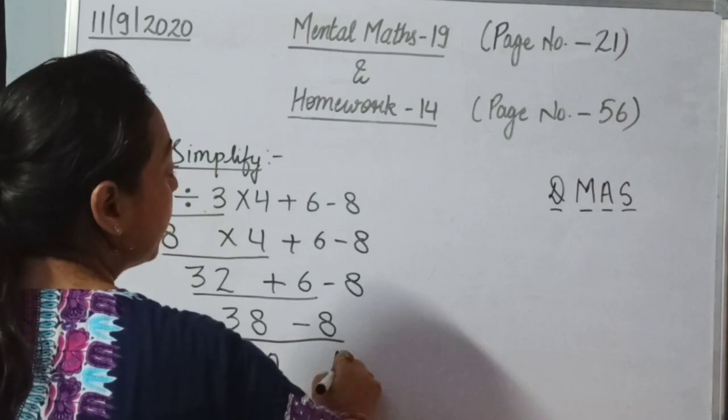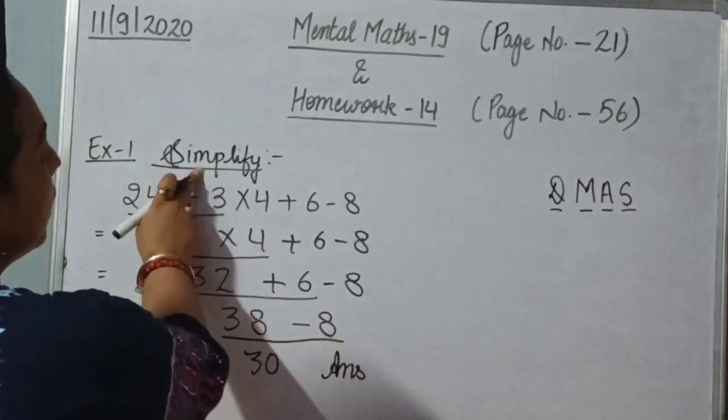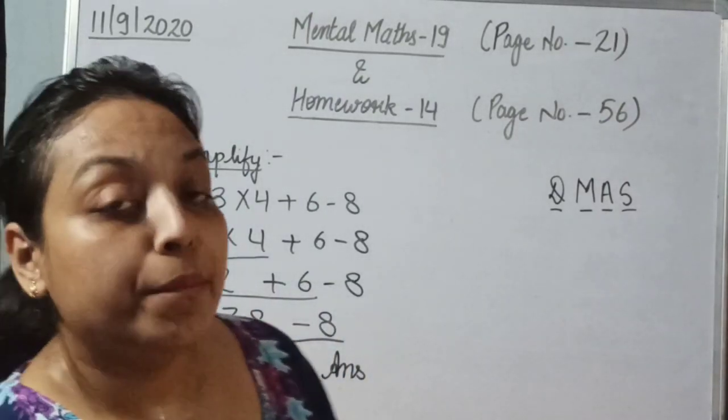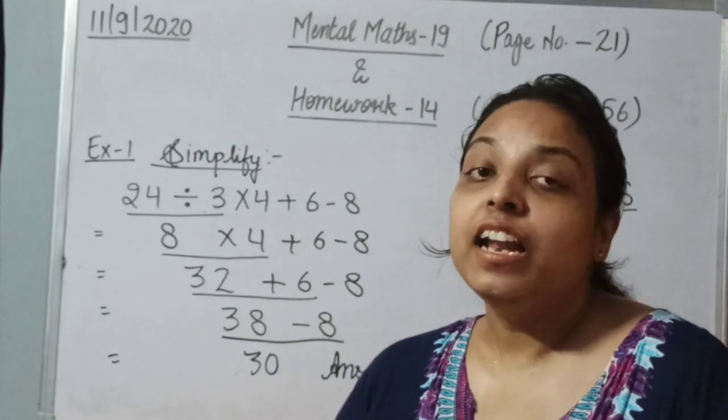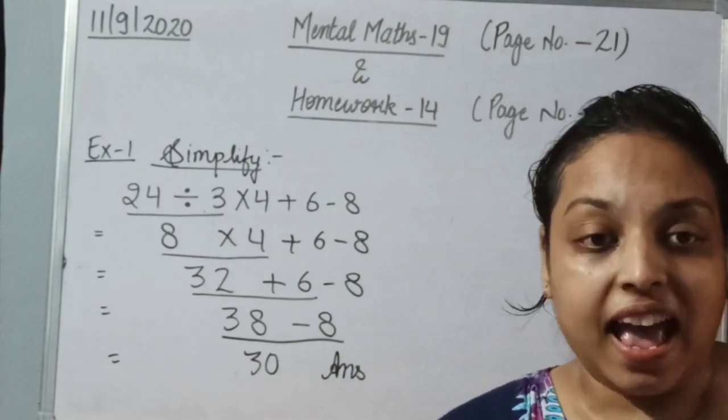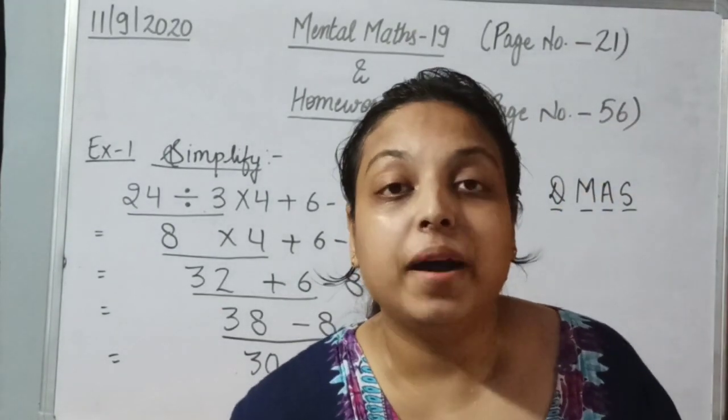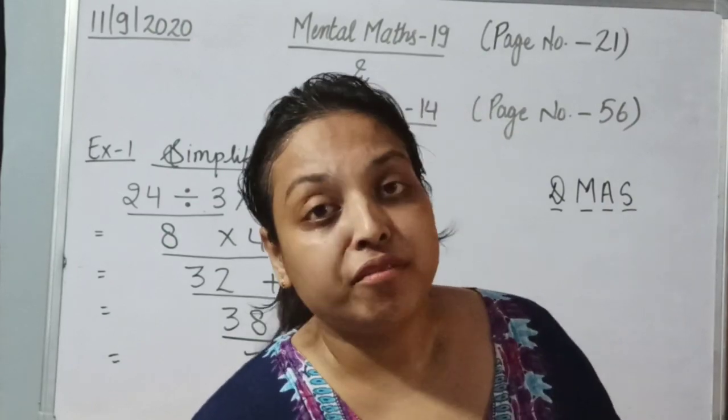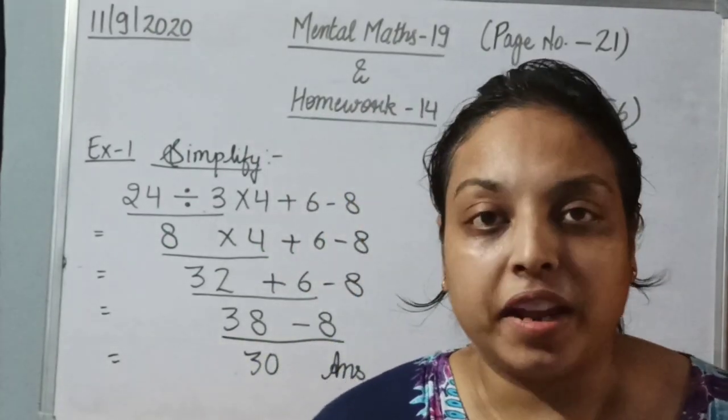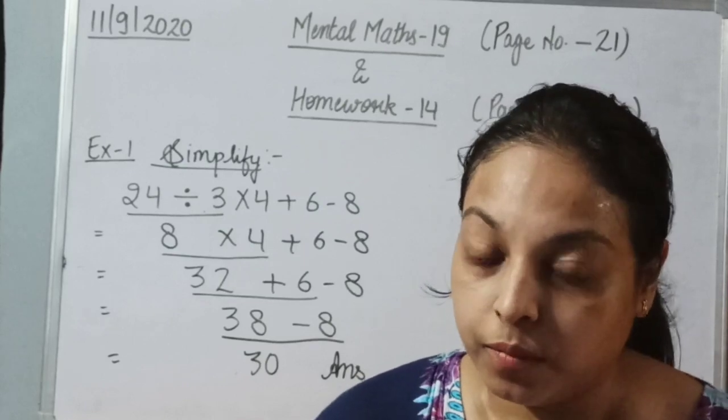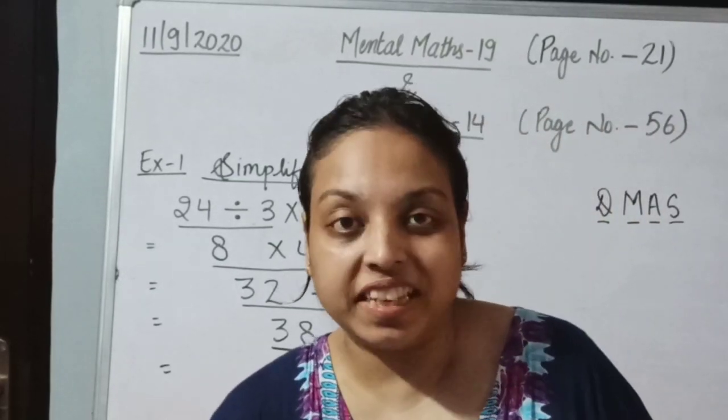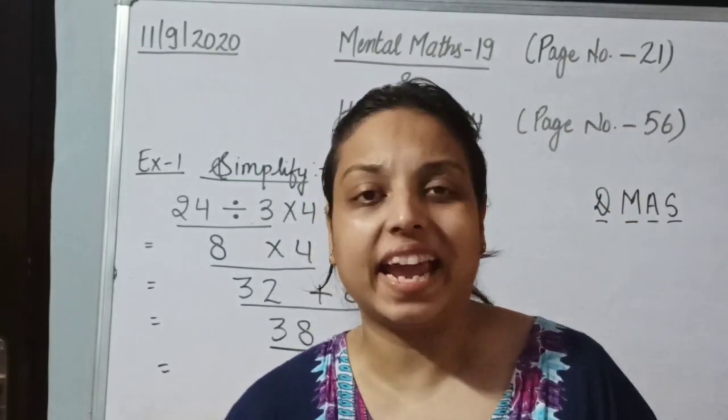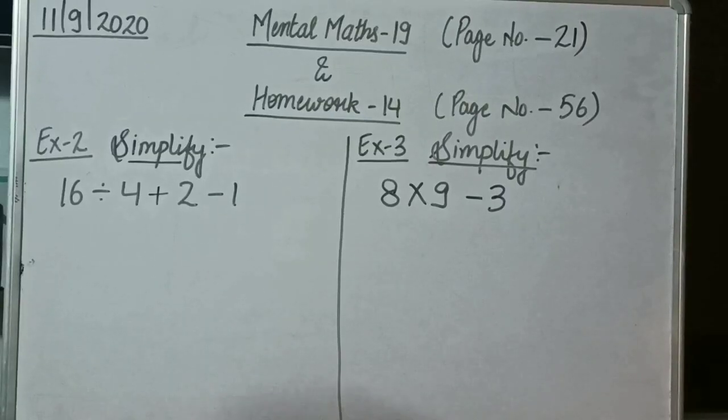We can say that 30 is the answer of this question. But many times we can see that a single question has all 4 operations, but it can also be possible when we have 2 or 3 operations in a same question. To know how to solve these questions, we will do more examples.